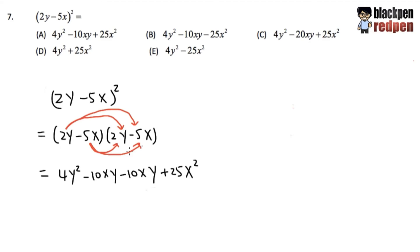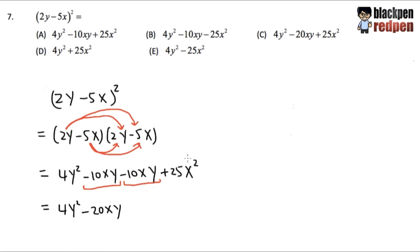2y is paired with both things in the second parentheses, and negative 5x is paired with both things in the second parentheses. Now we look at this expression to see if there is anything we can combine as like terms. The middle terms, negative 10xy and negative 10xy, are like terms because they both have xy. For 4y squared there is nothing to combine, so we write 4y squared. For the two middle terms, negative 10 plus negative 10 gives negative 20, so we get negative 20xy. Then we write down plus 25x squared. This is the result, and as we can see, it matches answer choice C.